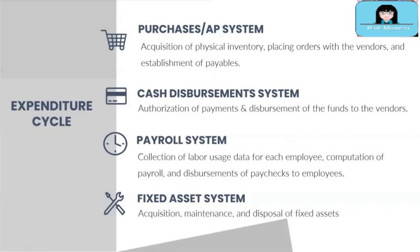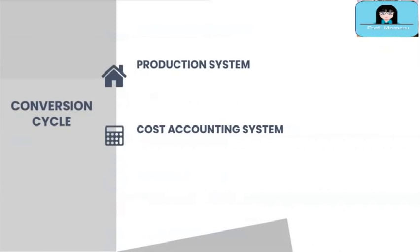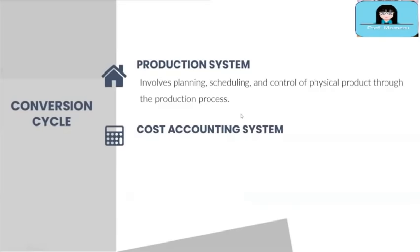Next are the subsystems of the conversion cycle. First is the production system, which involves planning, scheduling, and control of the physical product through the production process. This system handles the actual production, the transfers of raw materials from the raw materials warehouse to production departments, work in process, and completed finished goods, as well as the transfers of work in process from one department to another.